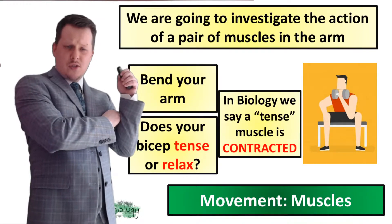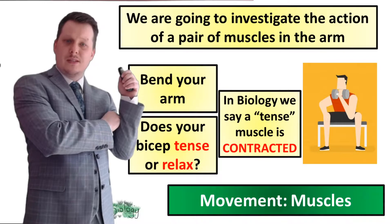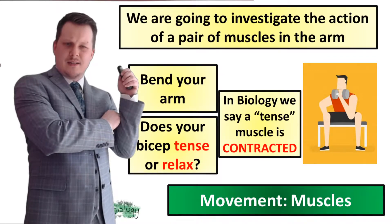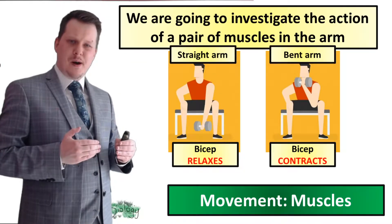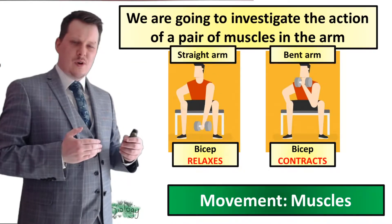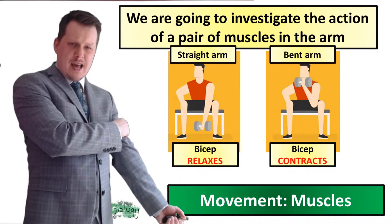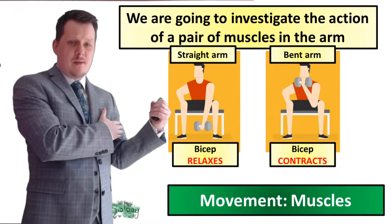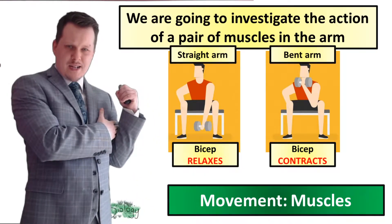In biology we don't say the word 'tense' — we say that the muscle is contracted. When the arm is straight the bicep is relaxed, and when the arm is bent the bicep has contracted.